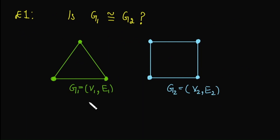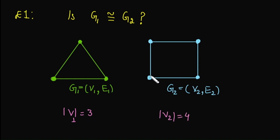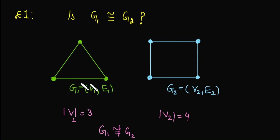Let's check whether G1 is isomorphic to G2. First we count the number of vertices. The total count of vertices in both cases are not the same, so we cannot define a one-to-one correspondence. Due to this, G1 is not isomorphic to G2. Basically, two graphs are isomorphic if and only if they are the same graphs but with a different representation. In this case, G1 has 3 vertices while G2 has 4 vertices, so we cannot convert G2 into the form of G1. They are not a similar structure, therefore they are not isomorphic.